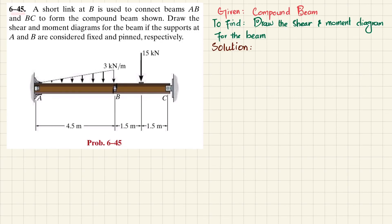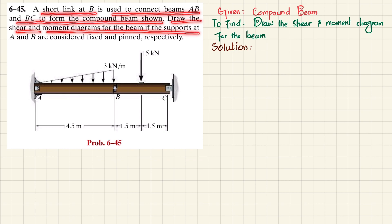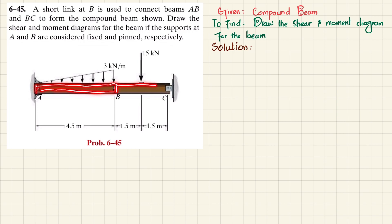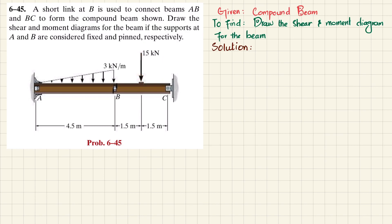Welcome back. Problem 6-45: a short link at P is used to connect beams AB and BC to form a compound beam. Draw the shear and moment diagram for the beam if the supports at A and C are considered fixed and pinned respectively. Beam AB has a uniformly increasing load of 3 kN/m, and there is a 15 kN point load. Points A and C have fixed and pin supports.